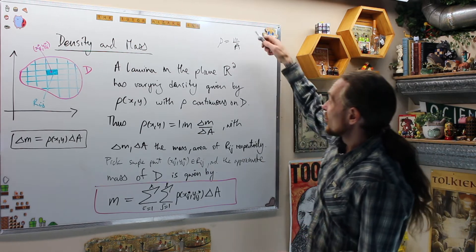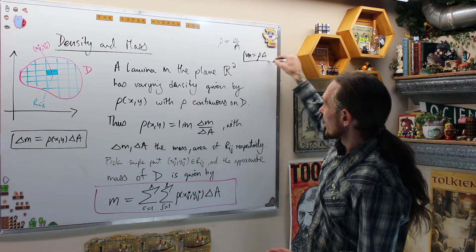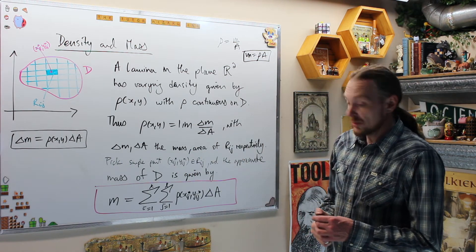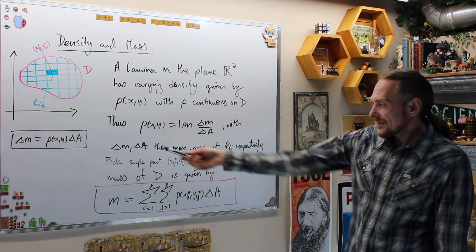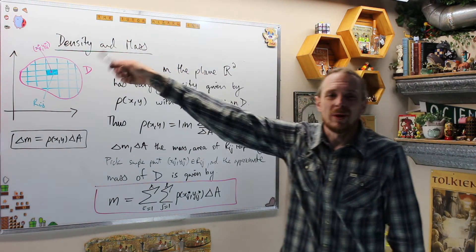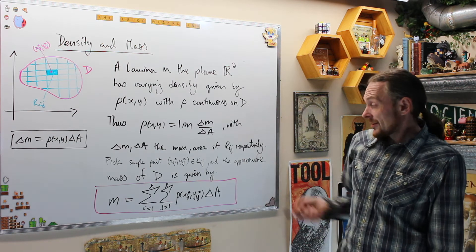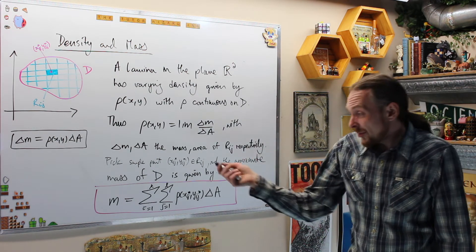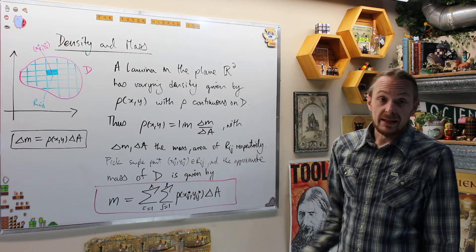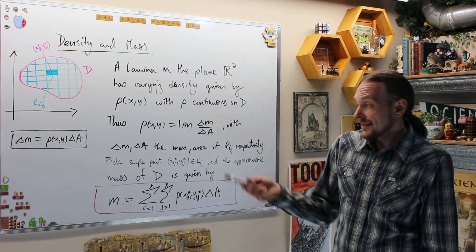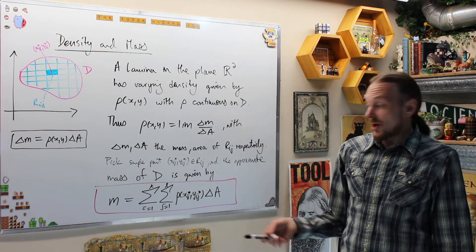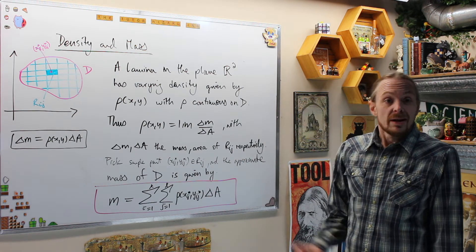We want the mass, so we're looking at ρ·A essentially, but we're going to use small changes first and then use the double integral idea. From that idea we subdivide this up — Δm and ΔA are the mass and area respectively of a small sub-rectangle. We pick a sample point x*ᵢⱼ, y*ᵢⱼ just like before, and therefore the approximate mass of region D is the sum of all those rectangles where the mass in each rectangle is ρ times ΔA. So the approximate mass will be this double sum.